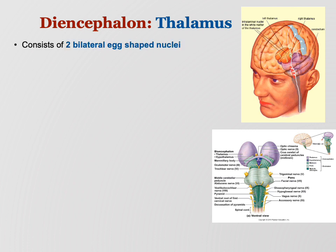The first part of the diencephalon we'll talk about is the thalamus. The thalamus is two bilateral egg-shaped nuclei. When you look at a sagittal section it just looks like two ovals, but they're actually big giant egg-like structures. Look at that illustration on the bottom — there's a left and right side, and they make up 80 percent of the diencephalon.